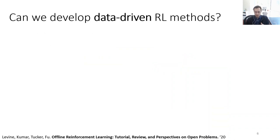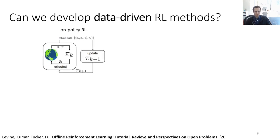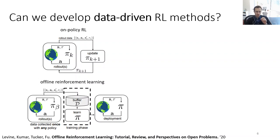Before we get to that question, we have to ask how we can develop data-driven RL methods in the first place. Classically, when we think about reinforcement learning, we think about on-policy RL, where a policy interacts with the world, collects a little bit of data, uses that data to improve itself, and then throws out the data and collects some more. If we want to use prior data, we have to look at offline reinforcement learning, which deals with a setting where you are given a dataset collected by some other policy Pi Beta, and you use that dataset to recover the best policy you can, then deploy it. The offline phase often presents the biggest challenge.